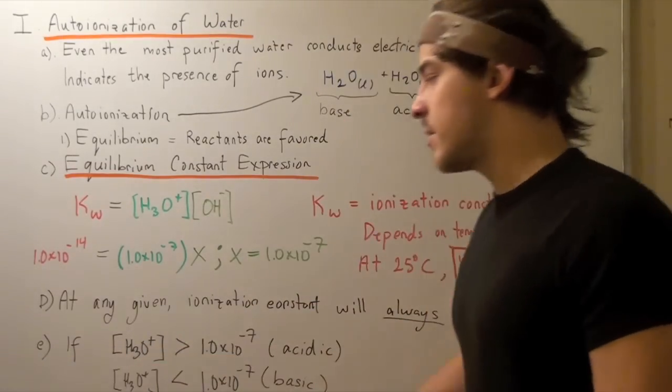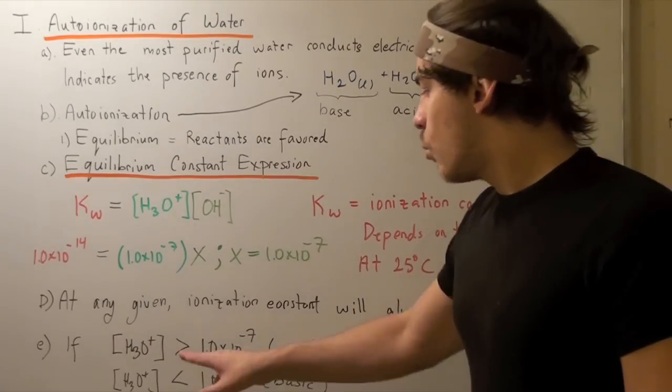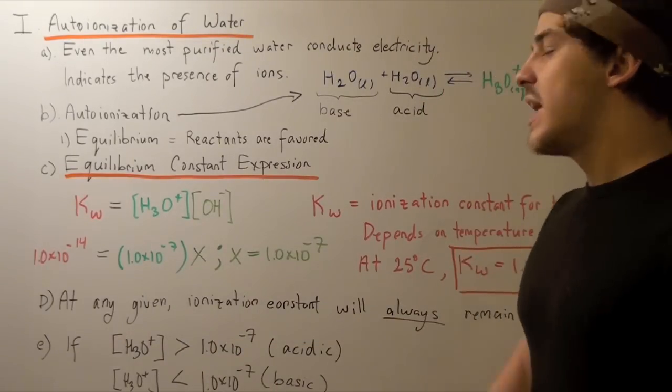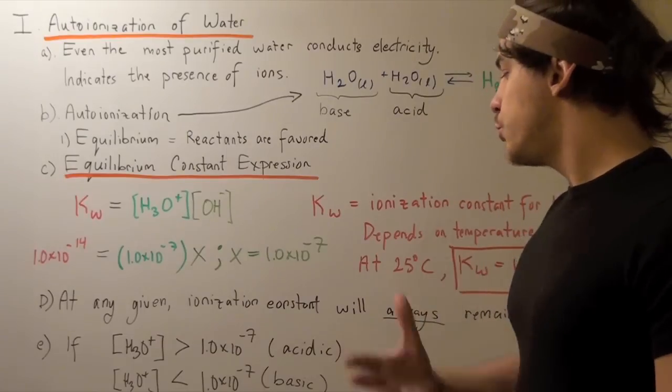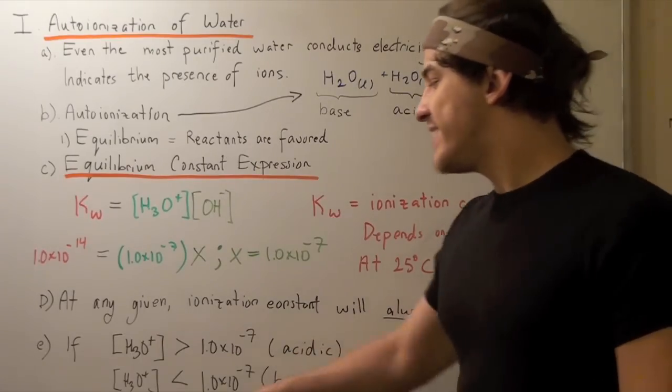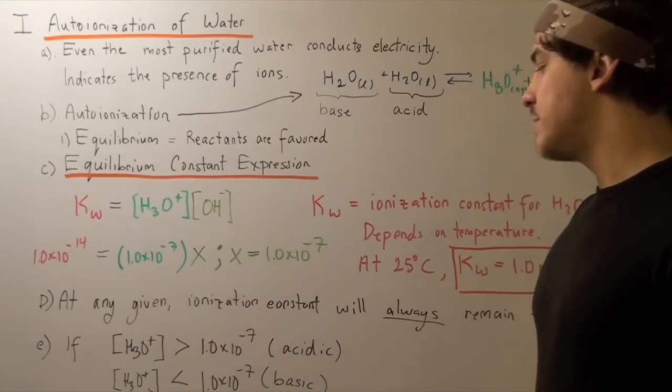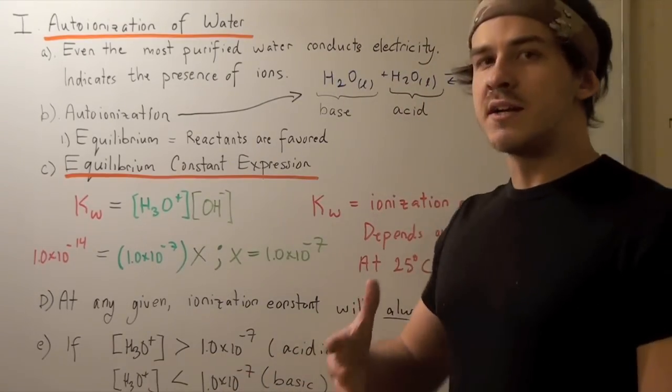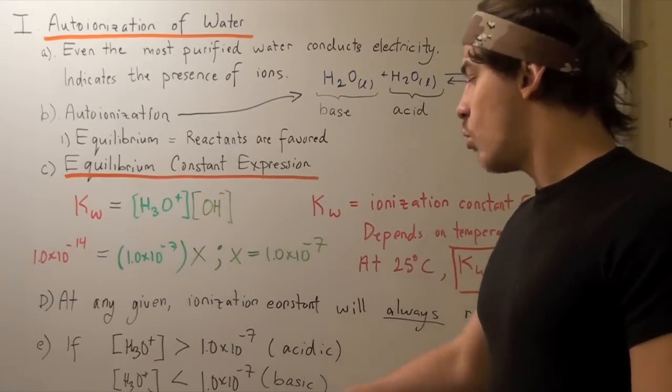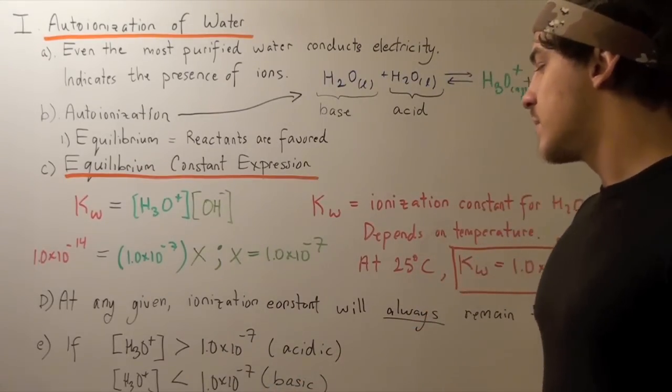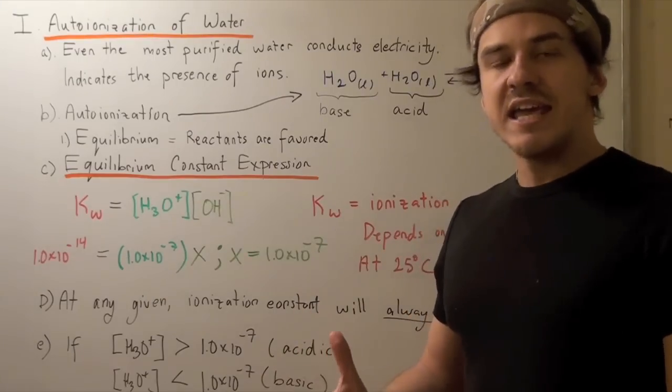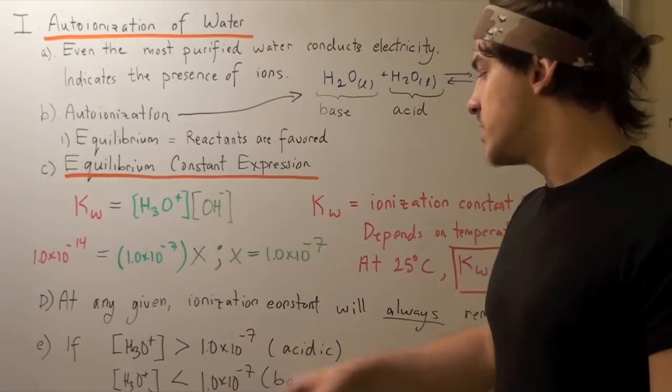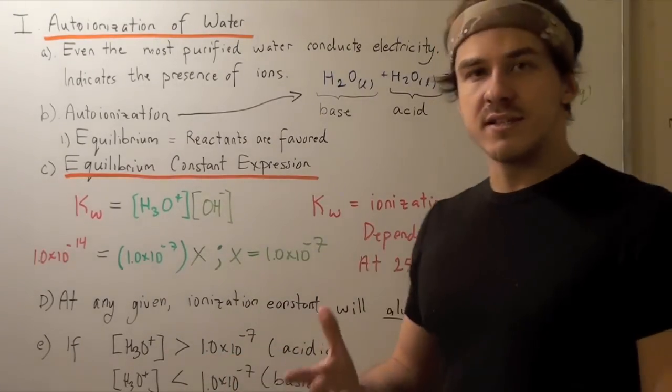If our hydronium concentration is greater than 1.0 times 10 to negative 7, that means our solution is acidic. If it's less than 1.0 times 10 to negative 7, it's basic. Likewise, if our hydroxide concentration is less than 1.0 times 10 to negative 7, it's an acidic solution. If it's more than 1.0 times 10 to negative 7, it's a basic solution.